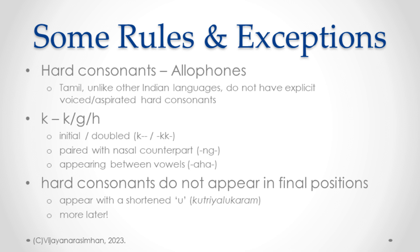Tamil actually has these voiced and aspirated variations, but they appear as allophones, not as explicit letters, and they are guided by the position of the letter. For the six hard consonants — Ka, Cha, Ta, Ta, Pa, Ra — Ta and the last Ra do not appear as initial letters. The other four — Ka, Cha, Ta, Pa — when appearing in initial position or when doubled, appear in their natural voiced, unaspirated form.